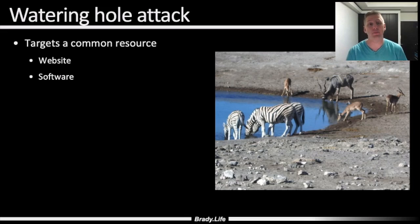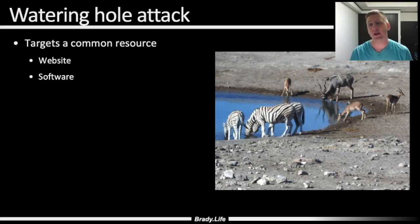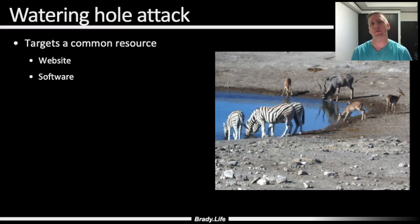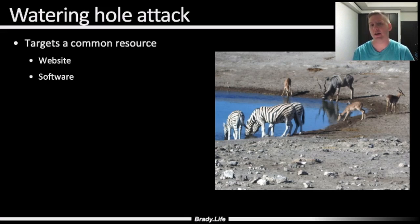So we target a shared resource like a website or software that our target users are known to use. We compromise this website and implant malware into it. It's a multi-step process to gain access to a hardened target.